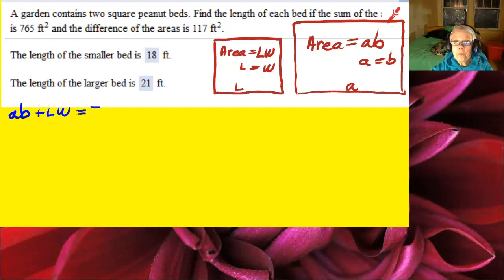Now, the sum of the area of the small square and the area of the big square is 765, and the difference of the areas, the bigger area minus the smaller area, is 117 square feet.